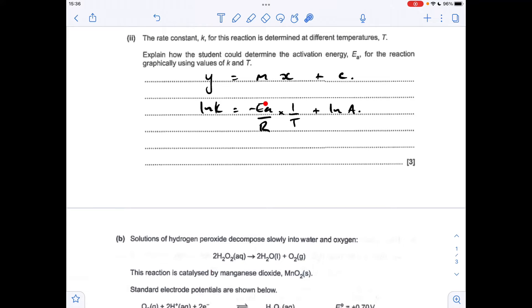To calculate the activation energy, we need to plot ln k on the y-axis against 1 over T on the x-axis. The gradient is going to be equal to minus Ea over R. Once we've drawn the straight line, if we measure the gradient and multiply by R, the gas constant, we've got the activation energy.